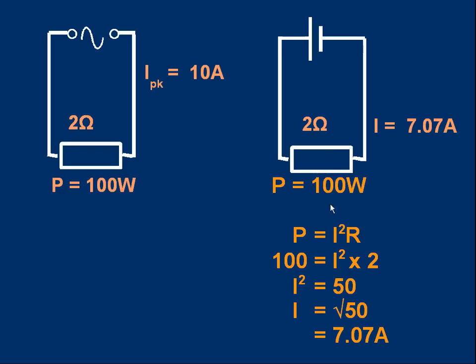Now let's look at the equivalent DC circuit. Suppose we set up a circuit with a cell providing a steady current — we could ask: what current is needed to produce the same power as the alternating current circuit, which is 100 watts, using the same 2 ohm resistor?